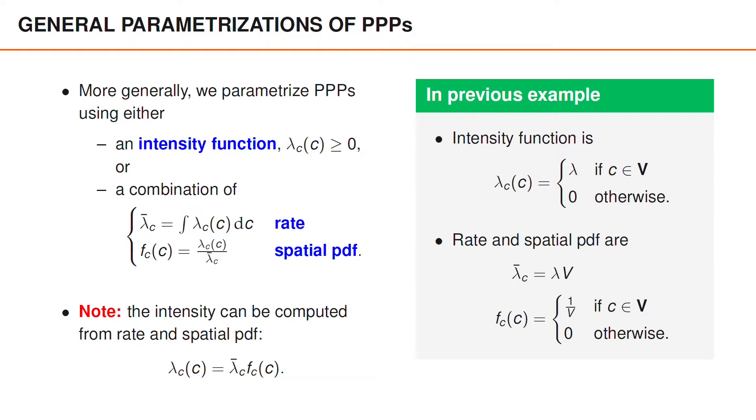For the Poisson point process that we saw before, the intensity function is lambda everywhere inside the field of view and zero outside the field of view. Similarly, the rate is lambda times v, and the spatial pdf is 1 over v everywhere inside the field of view and zero outside. Here, the rate tells us that the expected number of clutter detections is lambda times v, and the spatial pdf tells us that the vectors are uniformly distributed over the field of view.